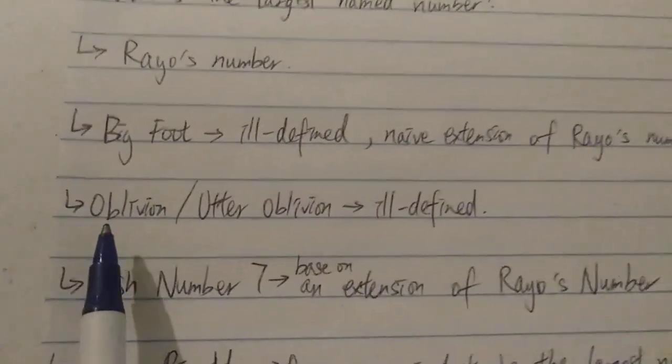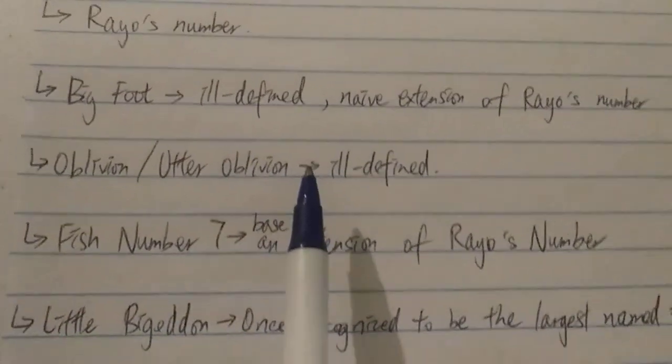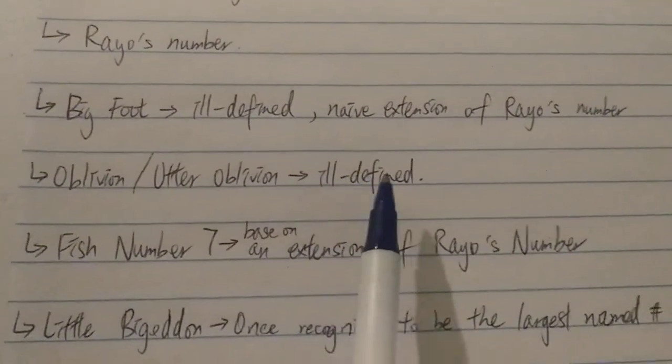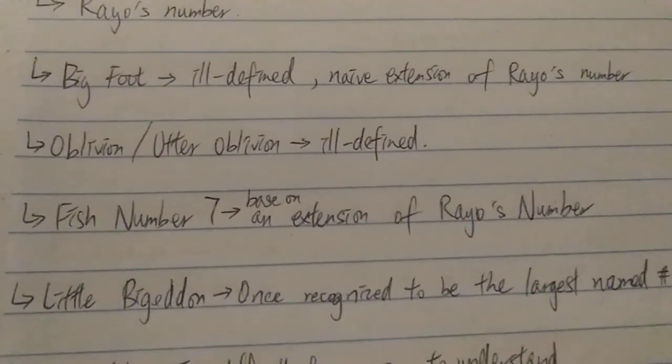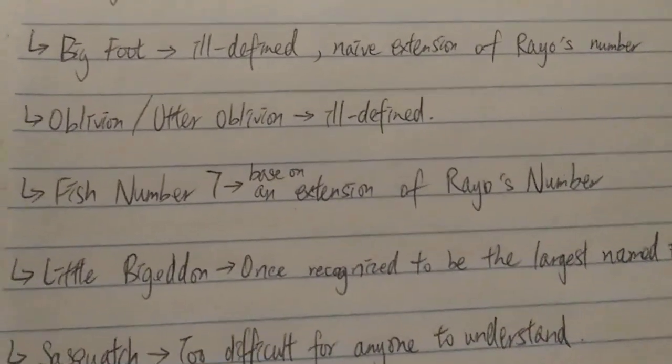Next, we have Oblivion and Other Oblivion. Again, they are later considered to be ill-defined. I'm not going to say what it is and how big they are. You can look it up yourself.